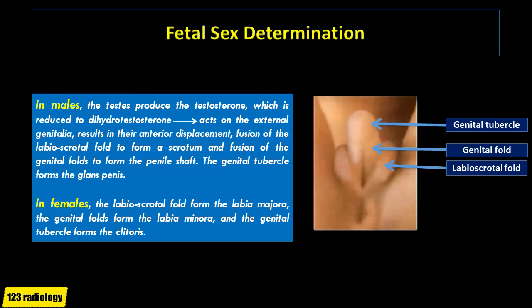In the female, the labioscrotal folds form the labia majora, the genital folds form the labia minora, and the genital tubercle forms the clitoris.